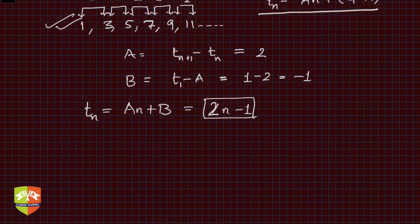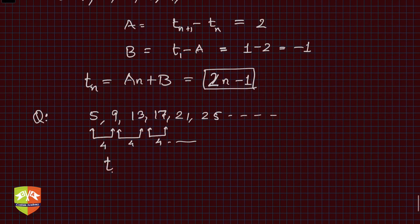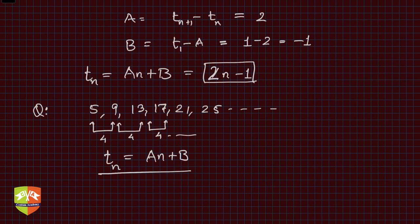Let's take another question. I have 5, 9, 13, 17, 21, 25. The consecutive difference is constant 4. This is linear form because in linear form we learned that tn can be expressed as an + b, where consecutive terms have common difference.